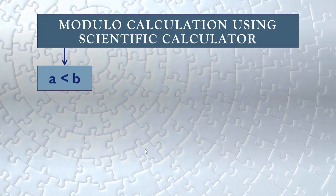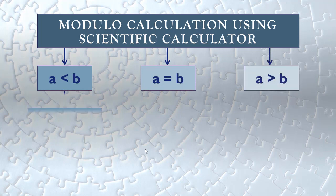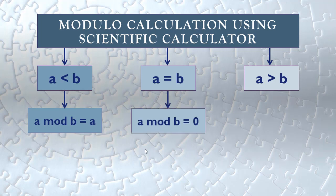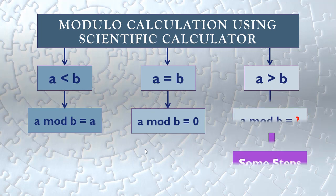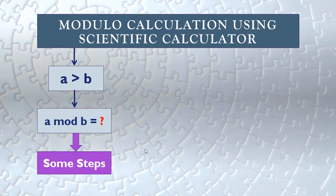First, we have some cases for calculation. The first case: if a is less than b, then a mod b will equal a. The second case: if a equals b, then a mod b will equal zero. The third case: if a is greater than b, a mod b will require some steps.